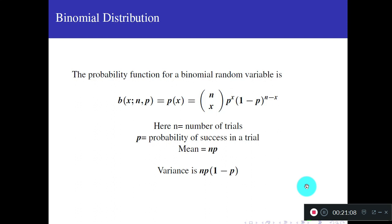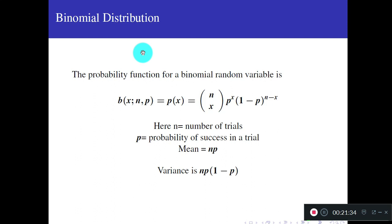The previous distributions — uniform, exponential, Laplace, Gaussian — are all continuous distributions. Binomial distribution is a distribution of a discrete random variable. Before discussing it, recall Bernoulli trials: an experiment with only two types of outcomes, such as tossing a coin (head or tail). This is a Bernoulli trial.